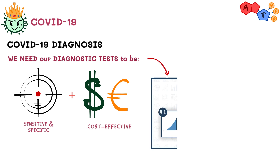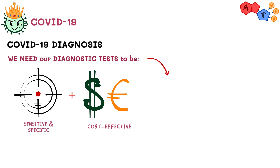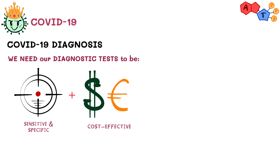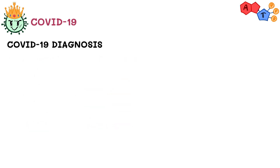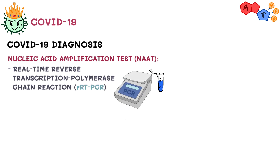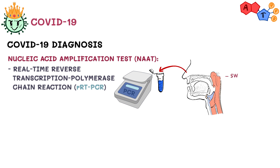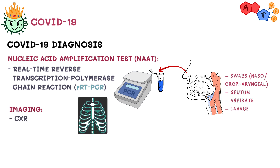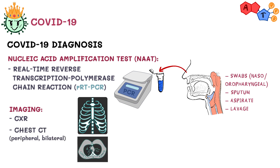The standard tests commonly used to diagnose COVID-19 include NAT (Nucleic Acid Amplification Test) and Real-Time Reverse Transcription Polymerase Chain Reaction (RT-PCR), applied to respiratory secretions from swabs of the nasopharynx or oropharynx, sputum, aspirate, or lavage. Chest X-rays are not usually ordered for COVID-19, but the physician might order one if suspecting other conditions. On chest CT, COVID-19 patients might show ground-glass opacities, and CT may show changes even before symptoms start.